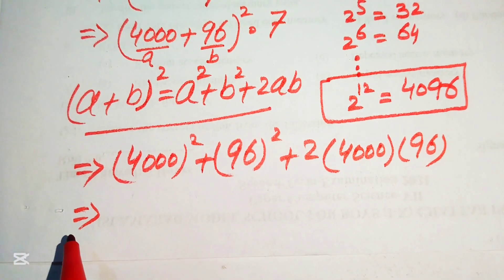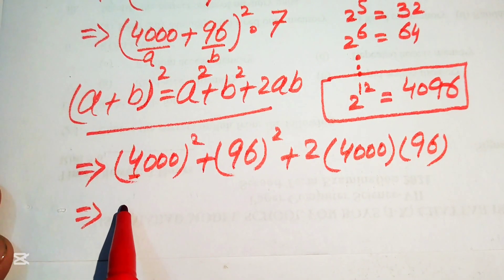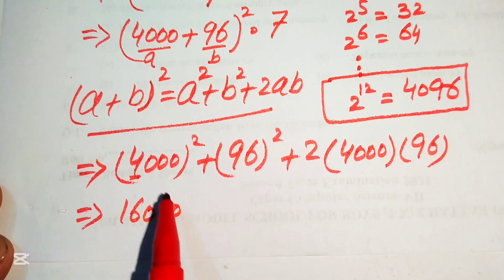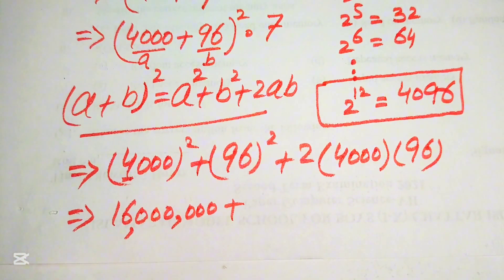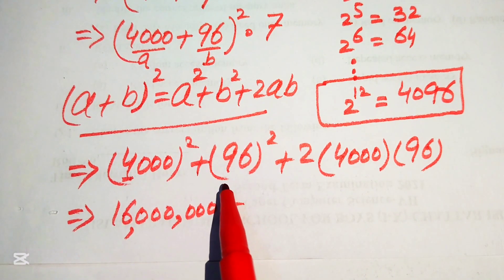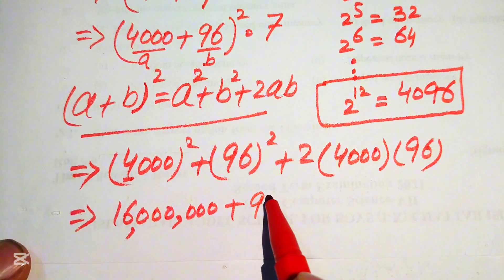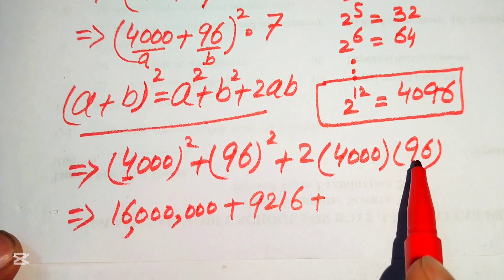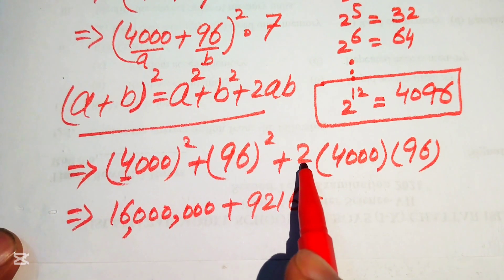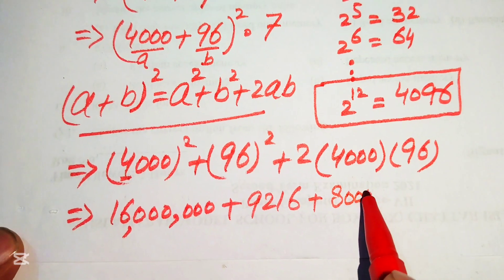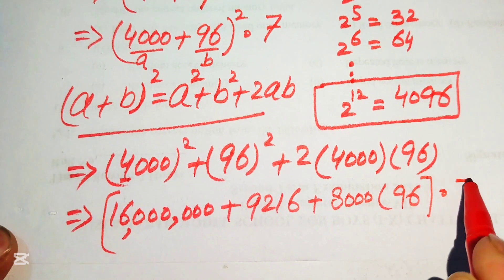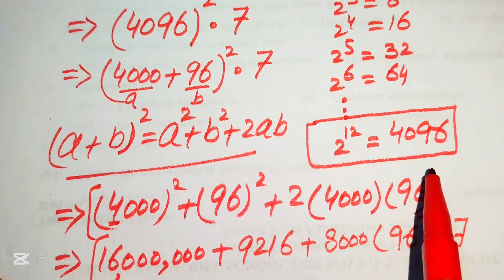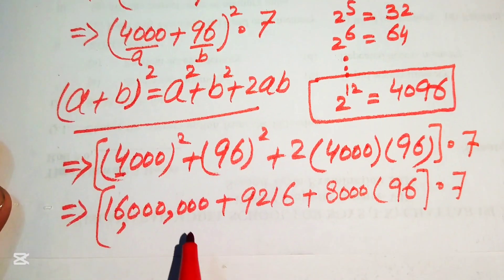To find 4000 squared: the square of 4 is 16, and doubling the three zeros gives six zeros, so 4000^2 = 16,000,000. For 96 squared, using traditional multiplication: 96 × 96 = 9216. For the cross term: 2 times 4000 times 96 — first compute 2 times 4000 = 8000, then multiply by 96, giving 768,000. This whole expression is then multiplied by 7.